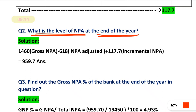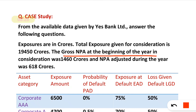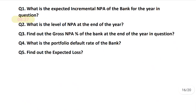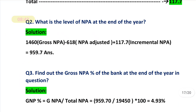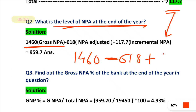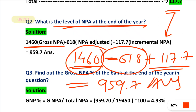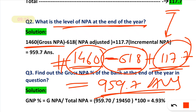For Question 2 — NPA level at the end of the year: gross NPA at beginning was 1,460 crores, NPA adjusted (recovered/written off) during the year is 618 crores (subtracted), and incremental NPA from Question 1 is 117.7 crores (added). So: 1,460 − 618 + 117.7 = 959.7 crores is the NPA level at year end.